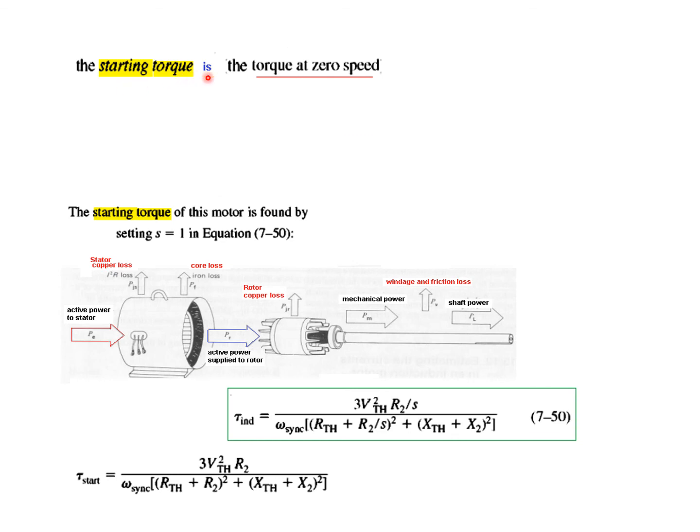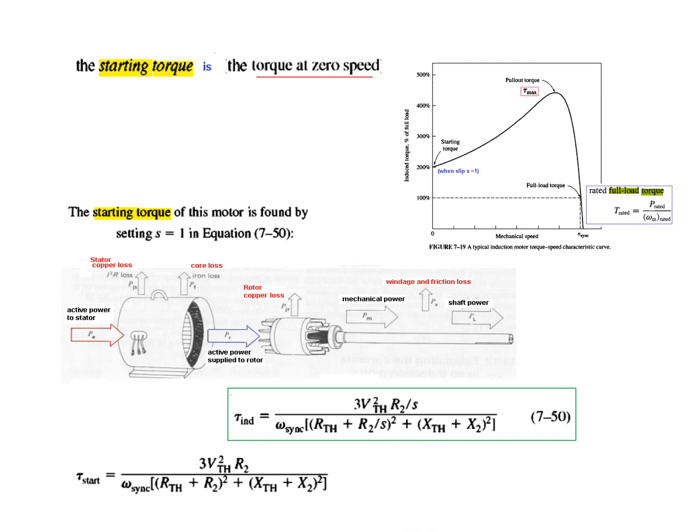And finally one more term left, that is the starting torque. The starting torque is the torque at zero speed here, speed is zero, rotor is standing still. So this torque is called the starting torque. We can find the starting torque by setting s equal to one. What does this mean? That the slip is hundred percent. Maximum slip is when the magnetic field is moving but the rotor is not moving. So there is maximum slip, and that is hundred percent or s equals one. So we put s equals one in the induced torque formula to get starting torque. So I hope this gives you an understanding of how you can derive all the relevant equations for the induction motor. Thank you.